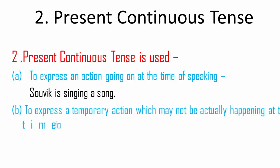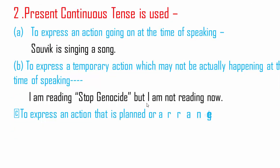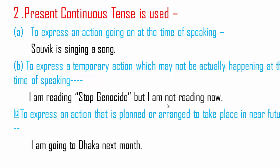B, to express a temporary action which may not be actually happening at the time of speaking. For example: 'I am reading Stop Genocide' — but I am not reading it right now; it is a book I am reading these days. C, to express an action that is planned or announced to take place in the near future. For example: 'I am going to Dhaka next month.' It will happen in the future but I am saying it now. This is also an example of present continuous tense.